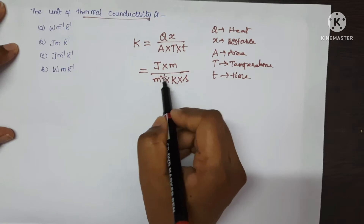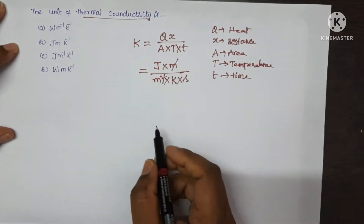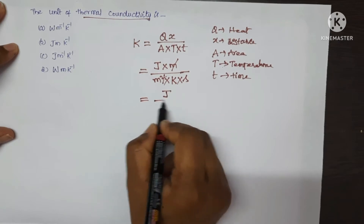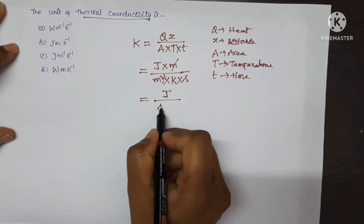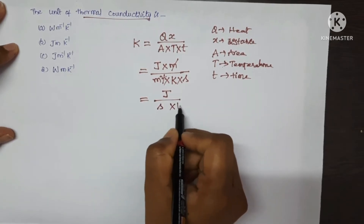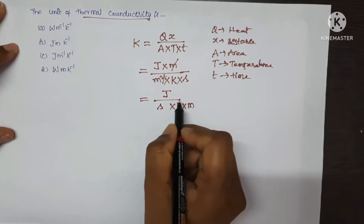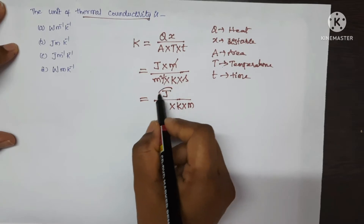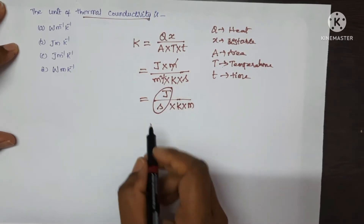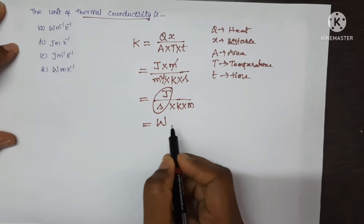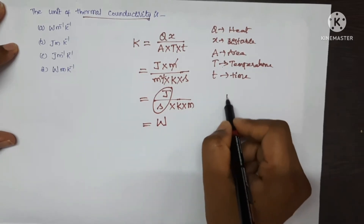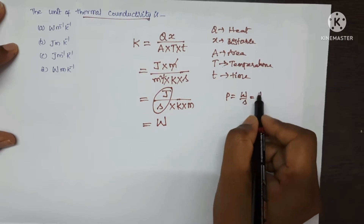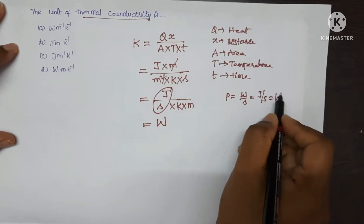See here, 1 meter and 1 meter will get cancelled. The remaining terms: Joule upon — writing second on this side — and Kelvin into meter. This Joule per second is nothing but Watt. Power is equal to work done upon second, which is equal to Joule per second, which is equal to Watt.